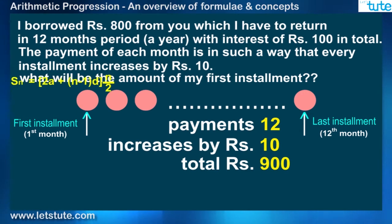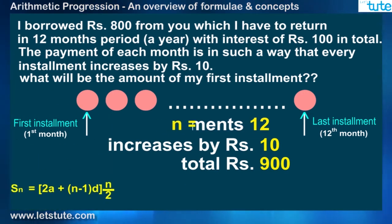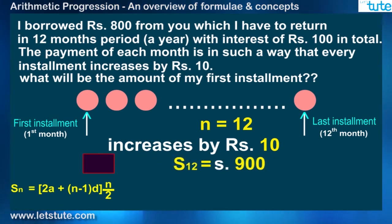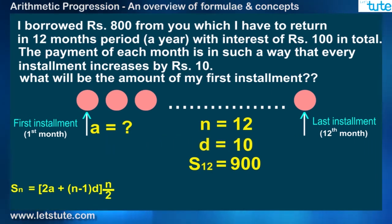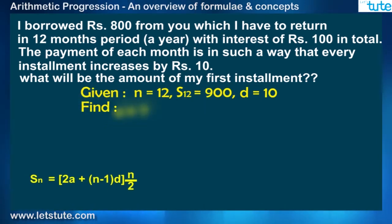So the conclusion I can draw is, I have to use the formula of Sn given n equals 12, where S12 is the sum of all 12 payments and is 900. I have to find my first payment means the first number of the sequence, which is A, where the common difference D is 10. The problem is solved.